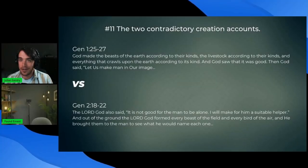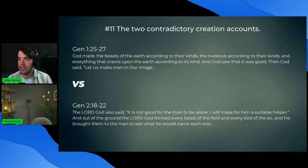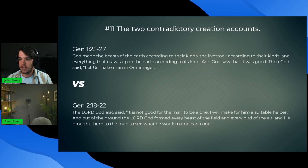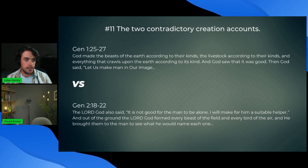So if anybody doesn't know, this argument of there being two separate creation accounts has been around for a long time. In Genesis 1 and Genesis 2, they kind of get the order mixed up. I have it here, but I'm actually just going to pull it up on the Skeptics website. Give me a second and we'll get started.